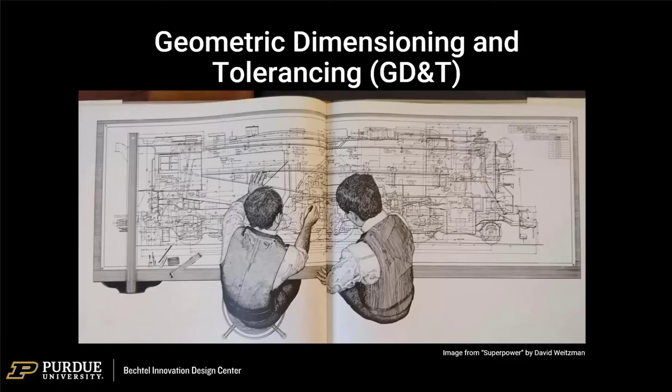I'm going to do geometric dimensioning and tolerancing fairly quickly. Geometric dimensioning and tolerancing came about because it began to be understood that the basic Cartesian dimensional controls were not fully fulfilling the actualization of engineering parts.